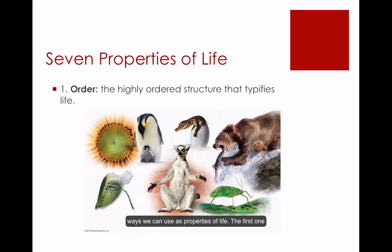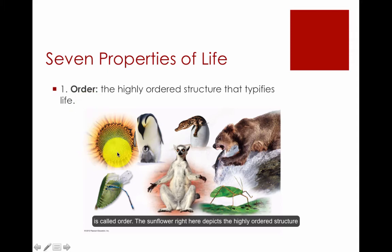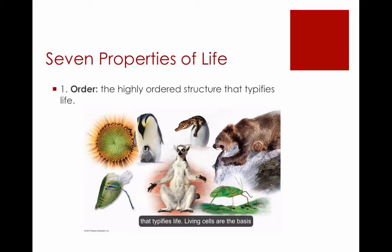The first property is called order. This sunflower depicts the highly ordered structure that typifies life. Living cells are the basis of this complex organization.